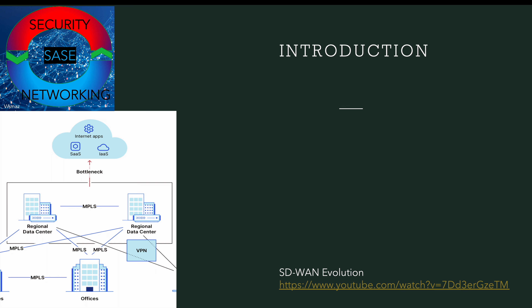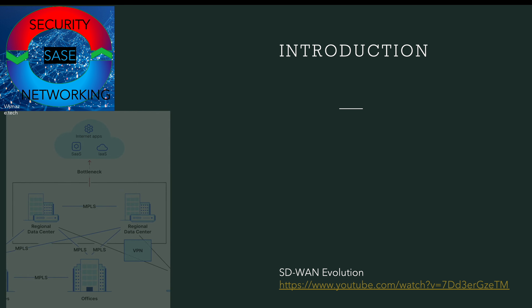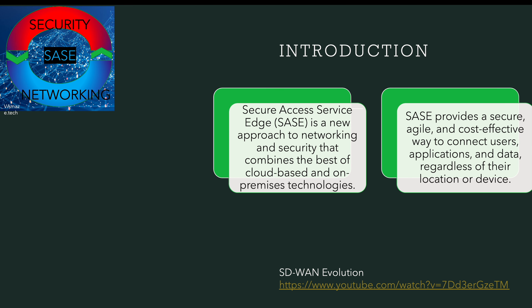We now have a lot of remote applications running in the cloud, along with users joining from any location and using any devices. That evolution drove the SASE platform architecture. SASE stands for Secure Access Service Edge — it is a new approach to networking and security that combines the benefits of cloud-based and on-premises technologies, providing a secure, agile, and cost-effective way to connect users, applications, and data regardless of their location or devices.